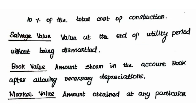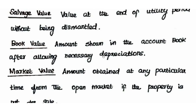Next is book value. Book value is the amount shown in the account book after allowing necessary depreciations. To calculate the book value, we take the initial value and subtract the accumulated depreciation. For example, if we calculate the book value for 5 years, we subtract 5 years of depreciation from the initial value to get the book value.